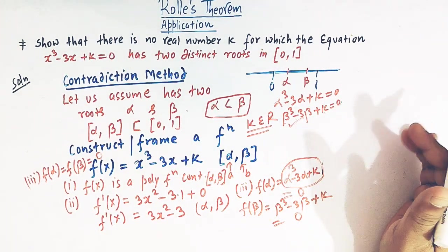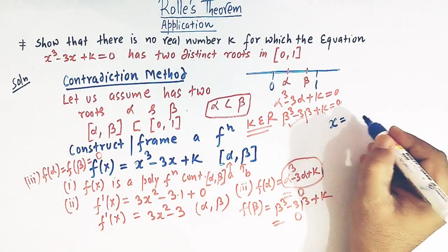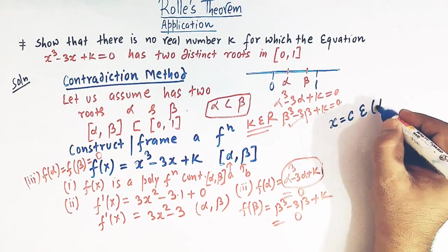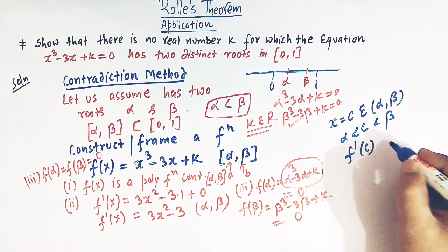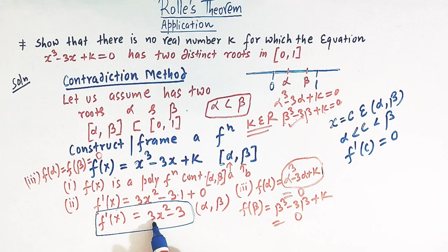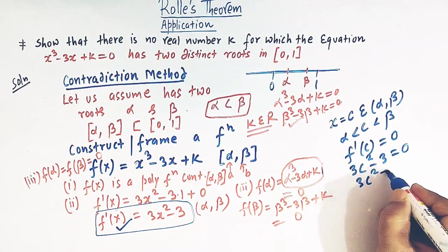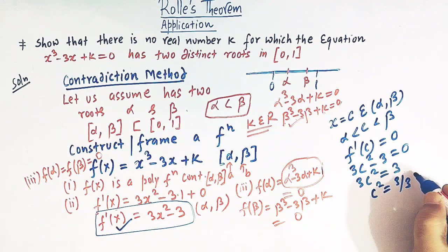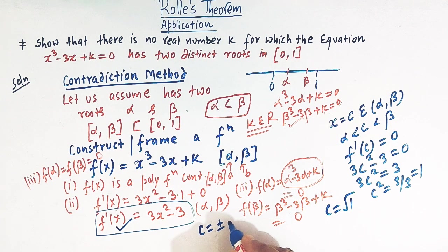Since all three conditions are satisfied, Rolle's theorem guarantees there must exist some point c in the open interval (α, β) such that f'(c) = 0. Since f'(x) = 3x² - 3, setting f'(c) = 0 gives 3c² - 3 = 0, so c² = 1, meaning c = ±1.